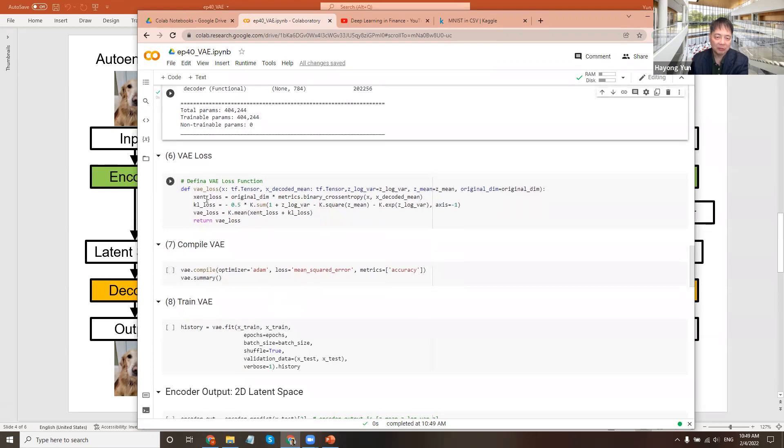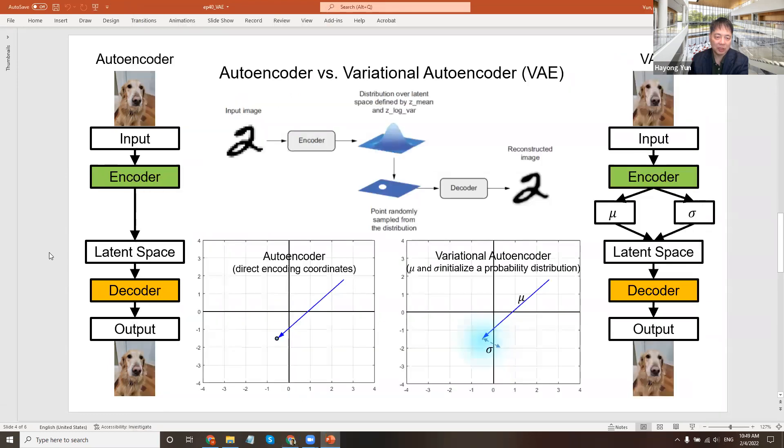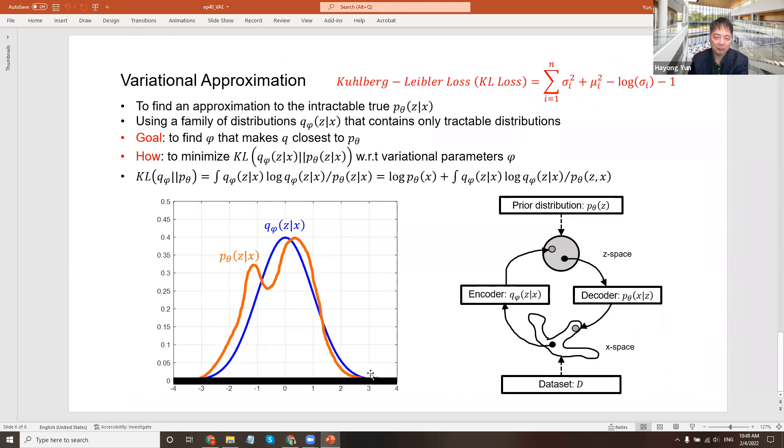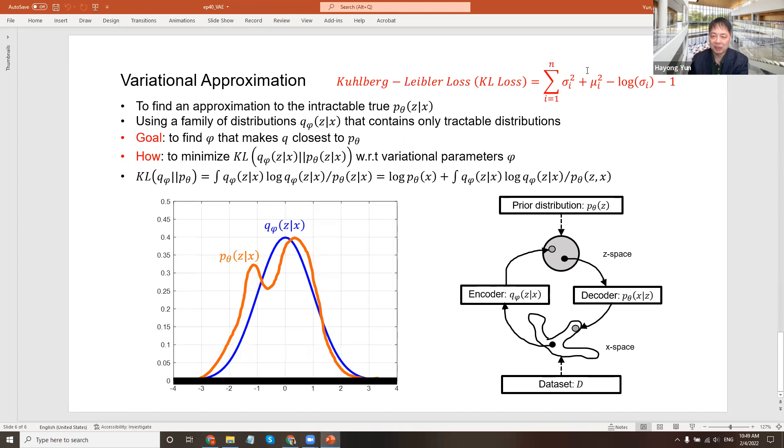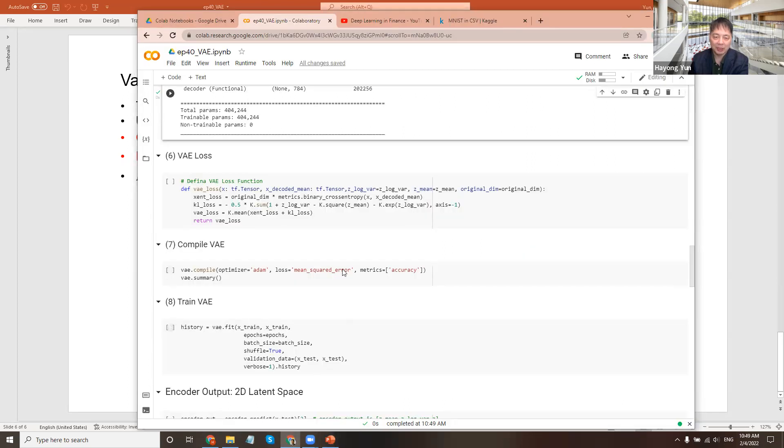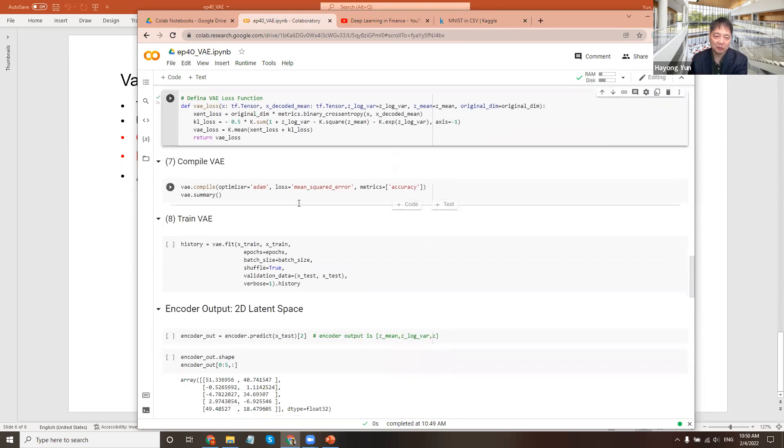So here's the VAE loss. The loss, again, we had to take care of the Kullback-Leibler loss in addition to the reconstruction loss. So here is the binary cross-entropy loss, but also we are adding that Kullback-Leibler loss. Remember, we had something like this here. So we are adding that part in this formula. It's a customized loss function, basically, a bit of an advanced technique in neural network.